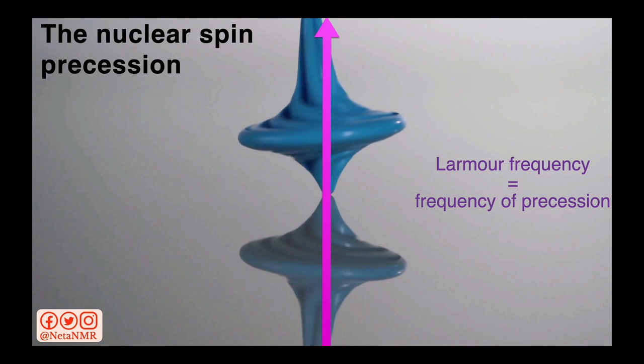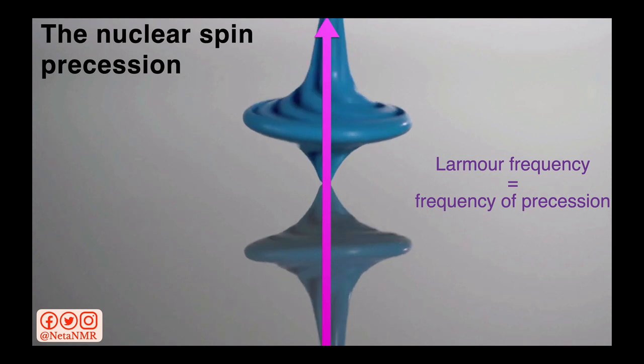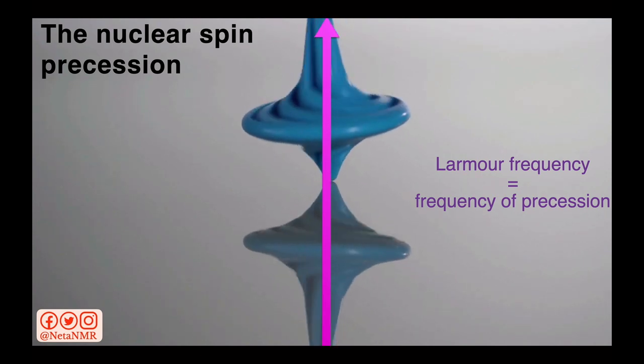This is similar to the precession of a spinning top. You can visualize the nuclear spin precession as the precession of the spinning top. You see the spinning top here, precessing around the arrow representing the external magnetic field.